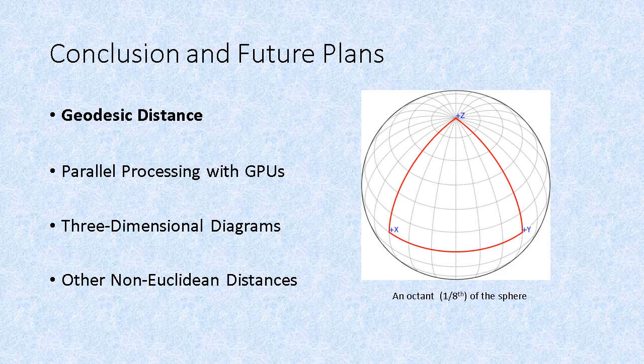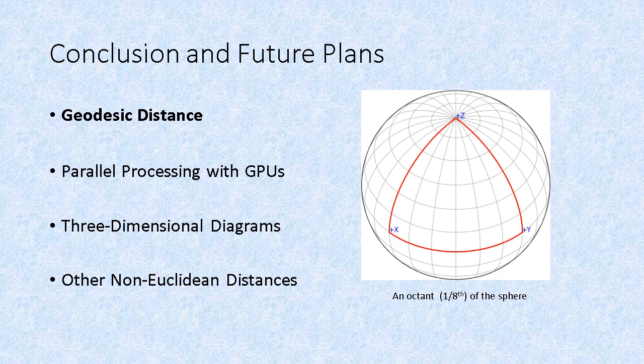As you can see in this picture, the surface of every octant is a triangular region that can be manipulated to reduce the number of calculations necessary for Voronoi diagram computation.